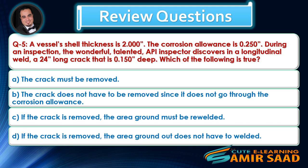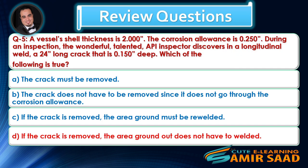Question 5: A vessel's shell thickness is 2.000, the corrosion allowance is 0.250. During an inspection, the API inspector discovers in a longitudinal weld a 24-inches long crack that is 0.150 deep. Which of the following is true? Answer is D.